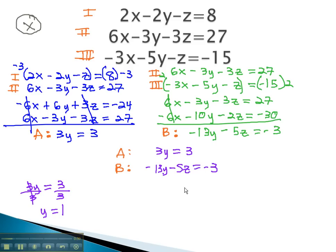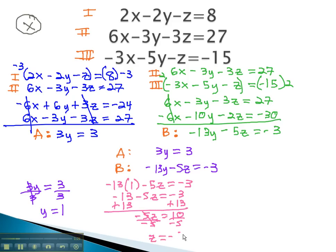We can now plug this value for y into equation B to find out what our next variable is. Equation B is negative 13y, which is 1, minus 5z equals negative 3. That gives us negative 13 minus 5z equals negative 3. Adding 13 to both sides gives us negative 5z equals 10. And dividing by negative 5 tells us that z is equal to negative 2.